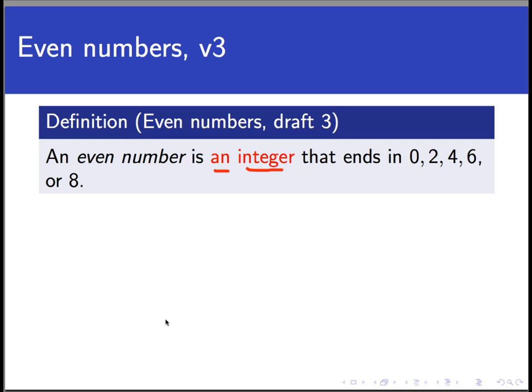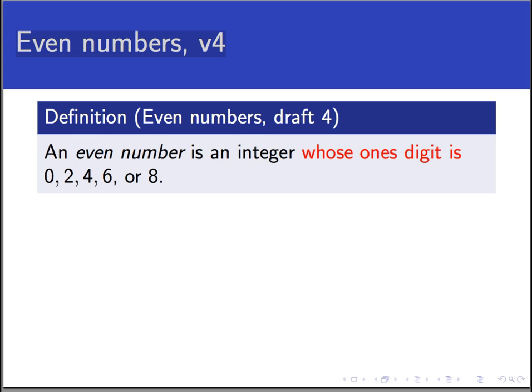But if you look closely, we still haven't cleared up the ambiguity. We still don't know what it means to end in something. What does that even mean? A more precise way to state this definition would be the following. An even number is an integer whose ones digit is 0, 2, 4, 6, or 8. Now, this is better because the notion of ones digit is a mathematically well-defined and well-understood term. But ends in is not. We don't have another definition for ends in, but we do have a definition for ones digit that we learned in arithmetic. So here at last, I think we have a workable definition.